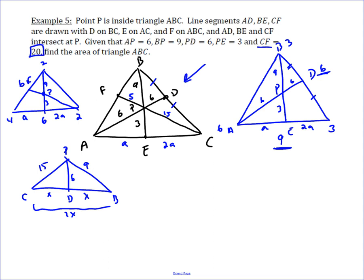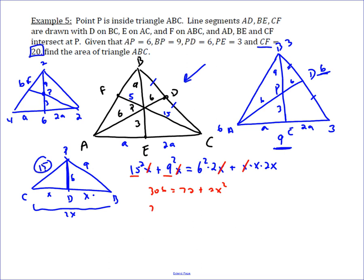Applying Stewart's theorem: we have 15 squared times X — you take this side squared times the opposite side — plus 9 squared times X, equals the cevian squared, which is 6 squared times the whole thing BC, which is 2X, plus X times X times 2X. All of these have an X, so we cancel them out. That leaves us with 225 plus 81 equals 306, which equals 72 plus 2X squared. So 234 equals 2X squared. Divide by 2 and take the square root: X squared equals 117, so X equals the square root of 117.